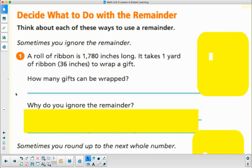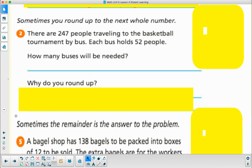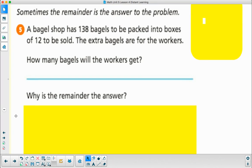Number two: sometimes you round up to the next whole number. There are 247 people traveling to the basketball tournament by bus. Each bus holds 52 people. How many buses will be needed? Why do you round up? Then do number five. Sometimes the remainder is the answer to the problem. A bagel shop has 138 bagels to be packed into boxes of 12 to be sold. The extra bagels are for the workers. How many bagels will the workers get? Why is the remainder the answer?